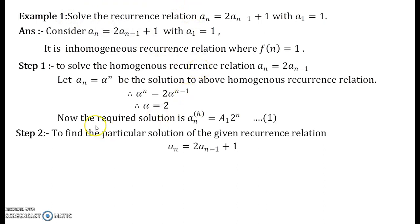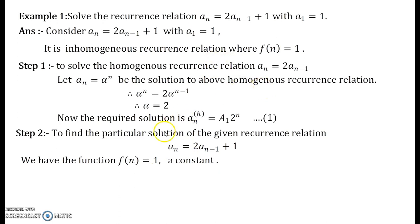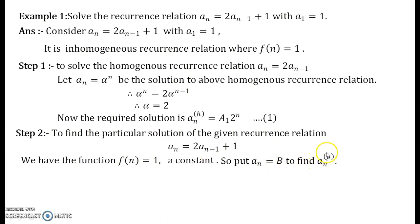Now we go for the particular solution of the given recurrence relation. Observe that f(n) is constant. From the table given in step 2 of the procedure, when the function is constant, we put a_n equal to b to find a_n^(p), which is the particular solution. In short, this b will be your particular solution.